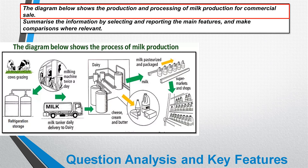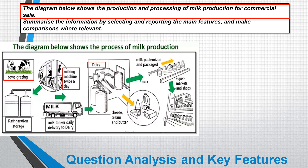What are the different stages? First we've got cows grazing, then a milking machine twice a day, then refrigeration storage, then a milk tanker with daily delivery to a dairy. Even if you don't know what a dairy is, you can guess from the picture. The dairy is a factory that turns milk into different products — here it produces cheese, cream, and butter, or it pasteurizes and packages milk. The final step is that it's sent to supermarkets and shops.